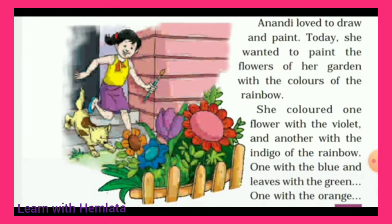Now today, she wanted to paint the flowers of her garden with the colors of the rainbow. Ab us ke mind mein jaisi planning thi — jaisa us nai rainbow dekha tha — to us ne socha ki jo mere garden ke flowers hain, unko main rainbow ke colors se paint karungi.